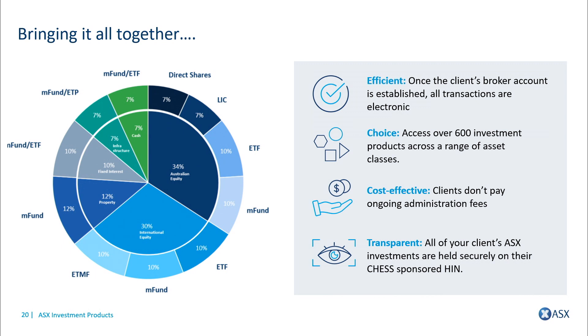Bringing it all together: investors can now own direct shares, listed investment companies, exchange traded funds, and unlisted managed funds all on their broker-sponsored HIN. We believe this is efficient, provides investors with choice across over 600 investment products, makes transacting cost effective for end investors, and because it's all held on the ASX, it increases the level of transparency available to investors.